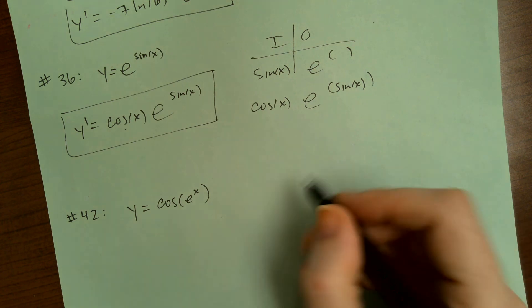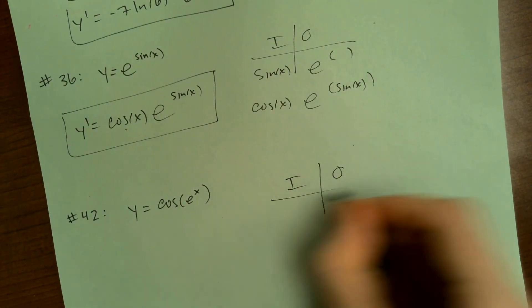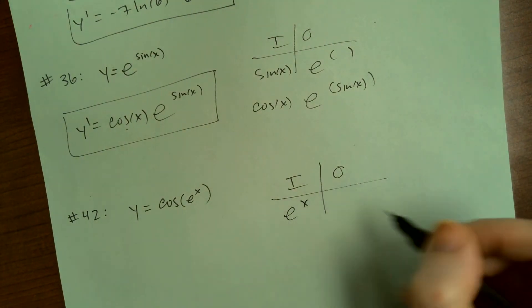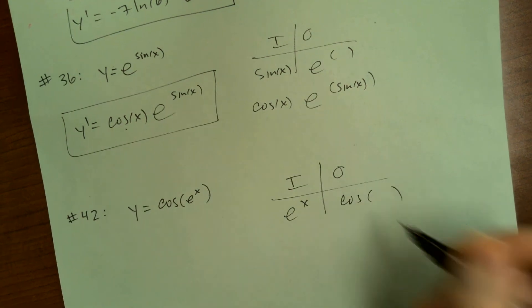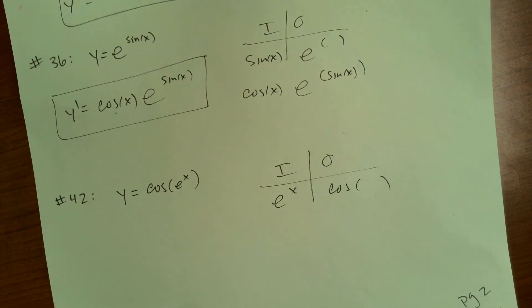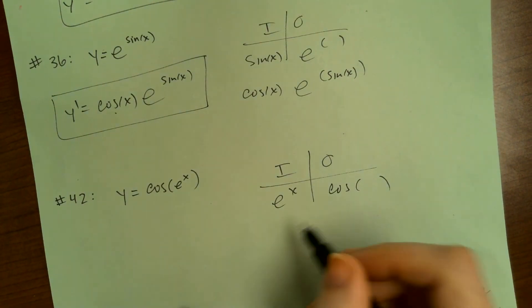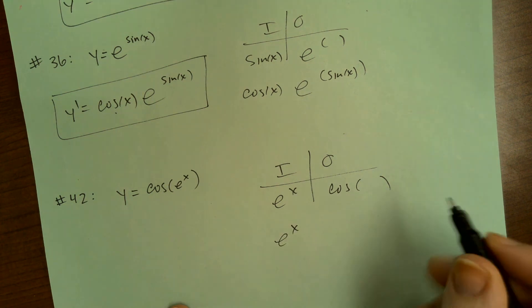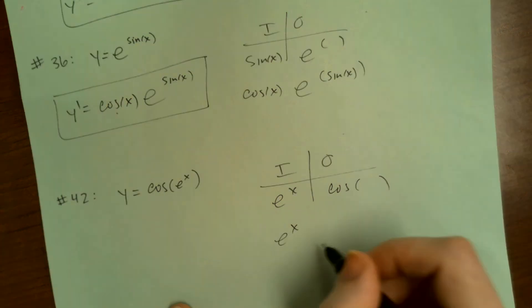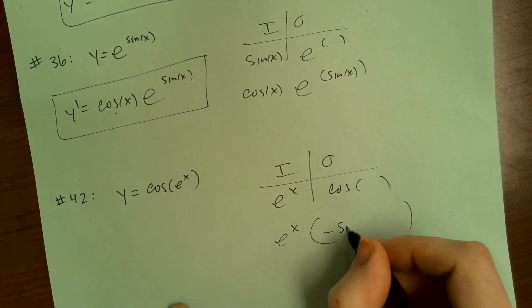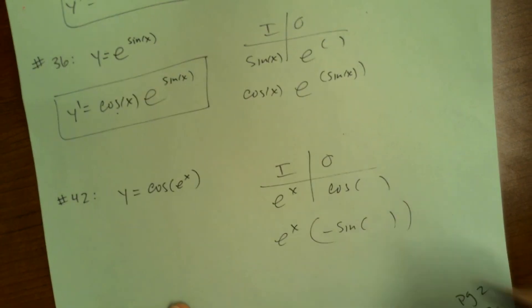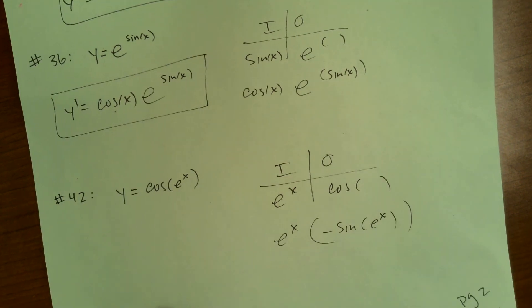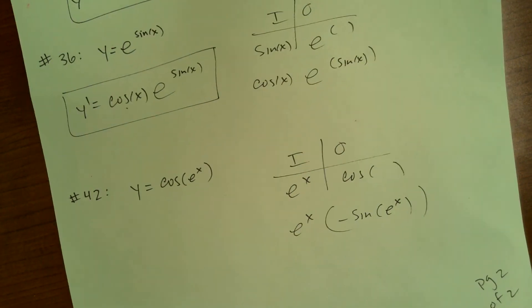One more — cosine of e to the x is another chain rule situation. The inside function is e to the x and the outside is cosine of blank. Derivative of e to the x is e to the x; derivative of cosine is negative sine; and e to the x goes back in. So y prime equals negative sine of e to the x times e to the x.